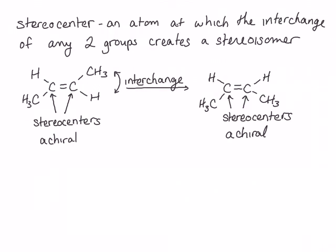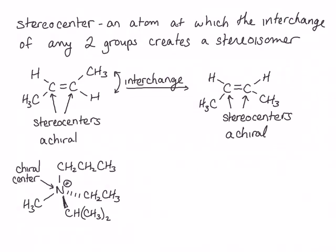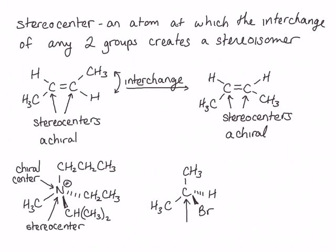Let's look at another example. This molecule contains a chiral center: the nitrogen, which is sp3 hybridized and bonded to four different groups. Because it's a chiral center, it is also a stereocenter. For our final example, this molecule contains neither a chiral center nor a stereocenter. The carbon is sp3 hybridized but is not bonded to four different groups — two of them are the same. It is also not a stereocenter because exchanging any two groups on it gives the same molecule.